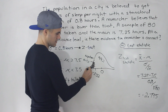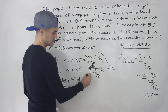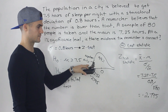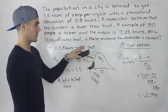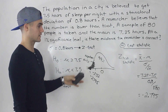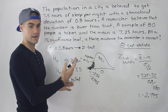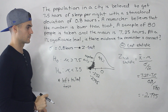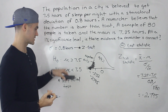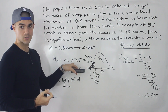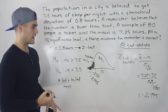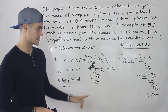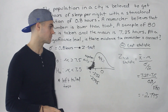On our diagram, negative 2.795 falls in the rejection region. So based on this hypothesis test, there is evidence that the researcher is correct — the average hours of sleep per night is less than the assumed value of 7.5. We reject the null hypothesis that the hours of sleep is greater than or equal to seven and a half hours. That is the conclusion of the hypothesis test, and that's how you do it manually using that formula.